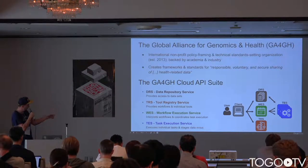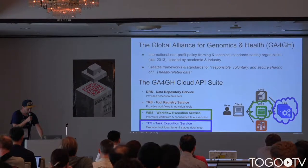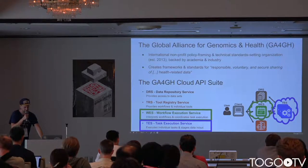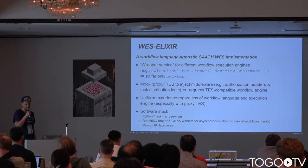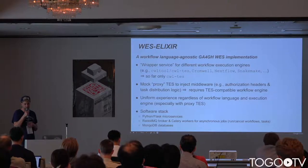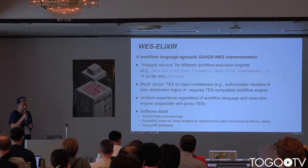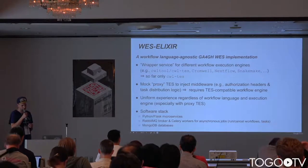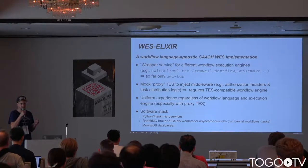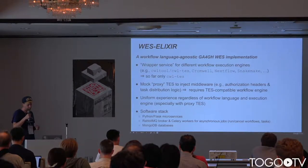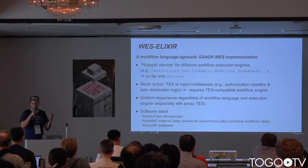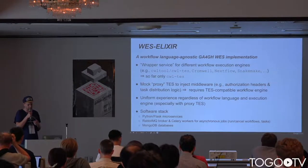This is shown on the scheme on the right. For this project, what's important is the Workflow Execution Service and to some extent the Task Execution Service. Around one year ago we started implementing WES Elixir, which is a workflow language agnostic GA4GH implementation. WES is the Workflow Execution Service — basically a wrapper service for different workflow execution engines. So far we are working with CWL-TES, which is an extension of CWL tool, which emits a TES request as an execution backend. In principle we could wrap any other workflow engine such as CWL, Nextflow, Snakemake, and so on.